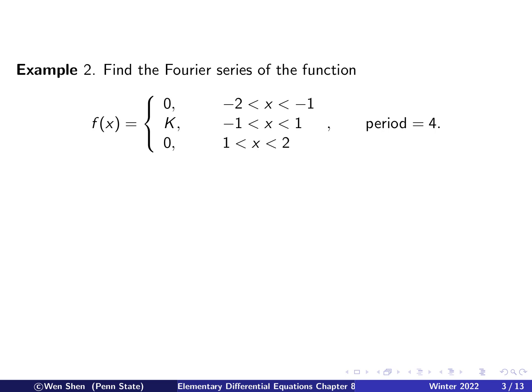Now let's consider a function f of x given as follows. On the interval from negative 2 to negative 1, it's 0. And from negative 1 to 1 is K, for some constant K. And then from 1 to 2, it's 0 again. And it's specified that the period is 4. So here, from negative 2 to 2, that's given a complete period, the behavior of the function over that.